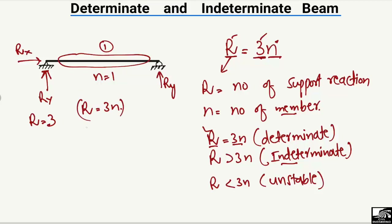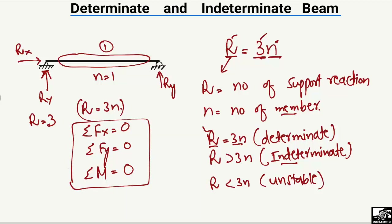For a determinate beam, we find support reactions using the three equilibrium equations: summation of Fx equals zero, summation of vertical forces equals zero, and summation of moments at any point equals zero. These three equilibrium equations can be used to find the support reactions only if the beam is determinate. For indeterminate or unstable beams, these equations cannot be used.